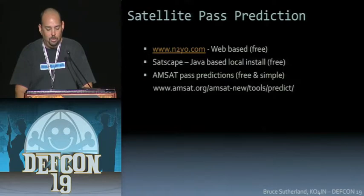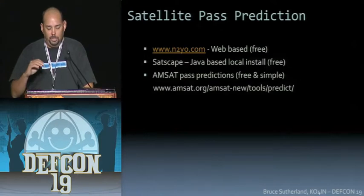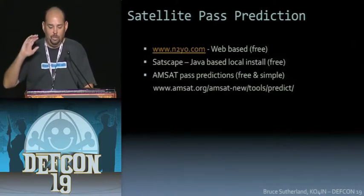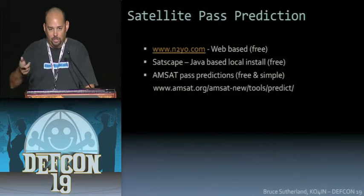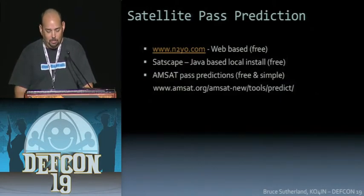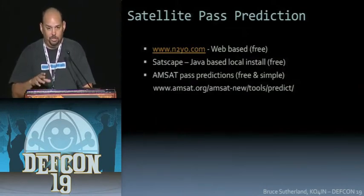You can also go to the AMSAT website, which has pass prediction tools where you can choose your satellite and dates and get a printout of the next 50 passes — good to take with you into the region you're sending from. N2YO will give you up to five days of passes, so right before you leave, print it out and you should be good.